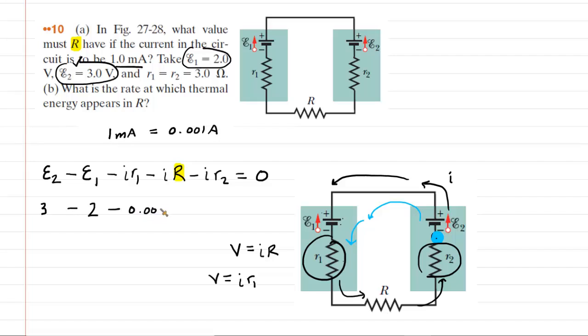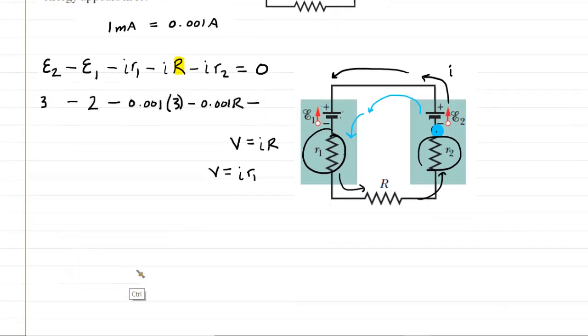Again, we will omit units in the equation for clarity. Multiplied by R1, which is three ohms. Then we have minus the current, 0.001, multiplied by the unknown capital R. Minus, we're going to run out of room here. So why don't we take this and move it down. Minus the current, which is 0.001, multiplied by R2, which also is three ohms. And we're going to set this equal to zero.